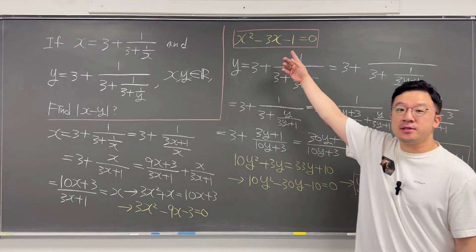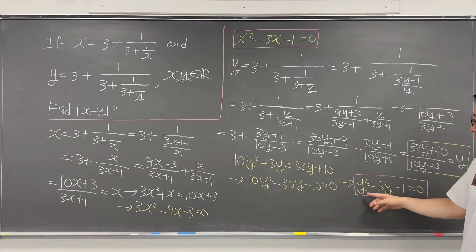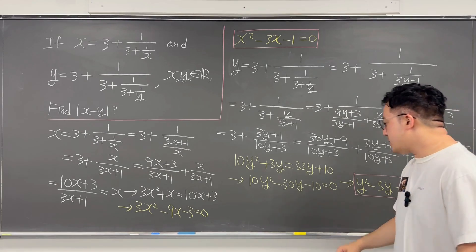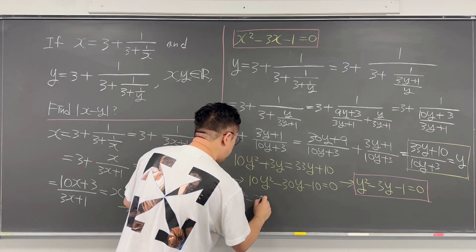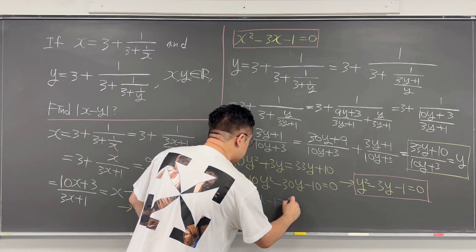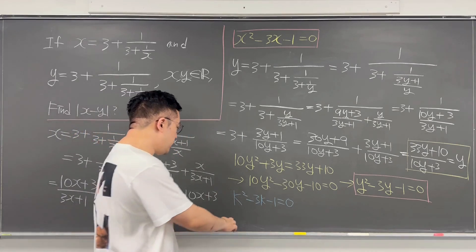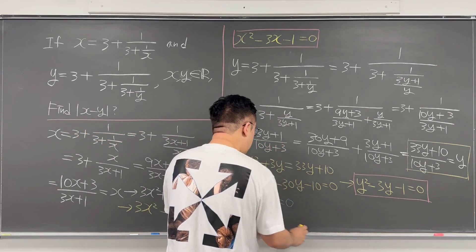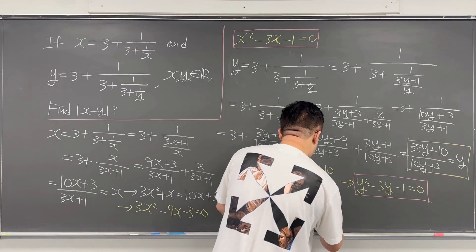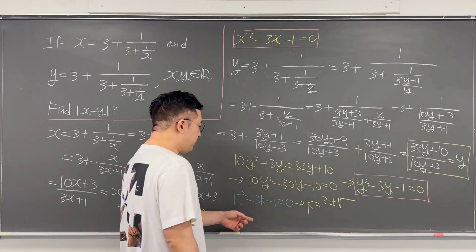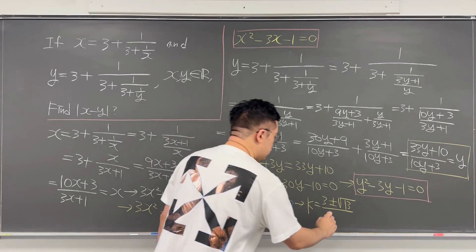If you look at the x and y equations: x squared minus 3x minus 1 equals 0, and y squared minus 3y minus 1 equals 0. Both x and y satisfy k squared minus 3k minus 1 equals 0. Since we can't factor this with integers, we use the quadratic formula: k equals 3 plus or minus square root of 13, all over 2.